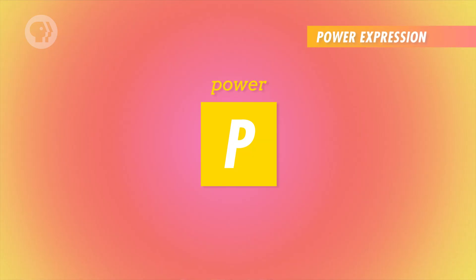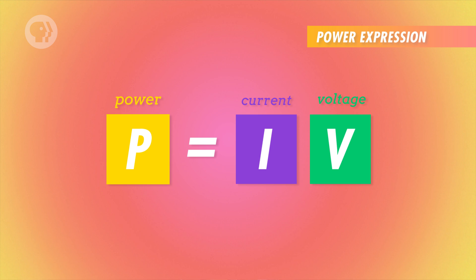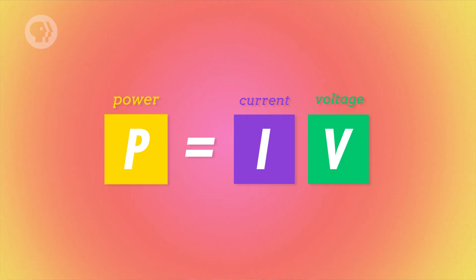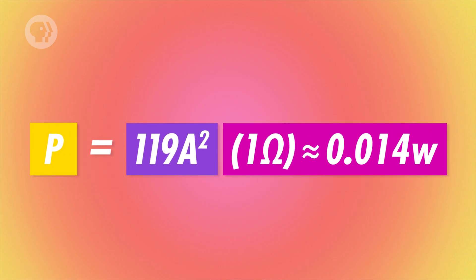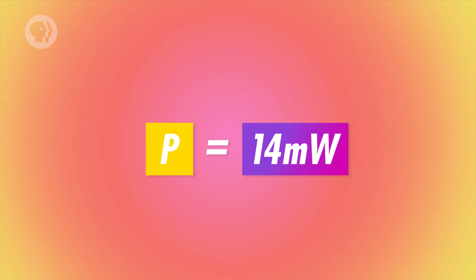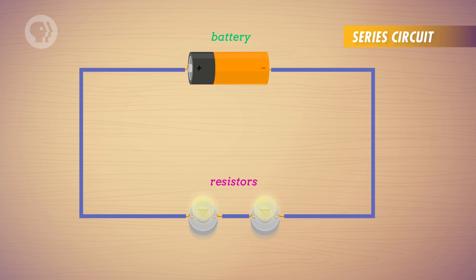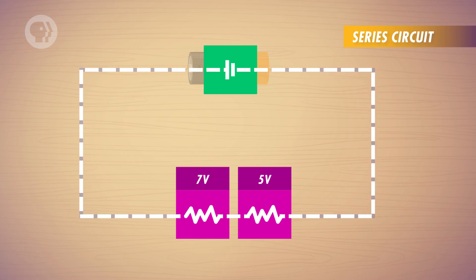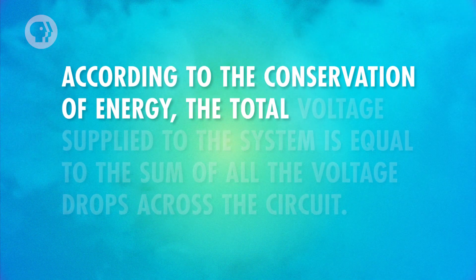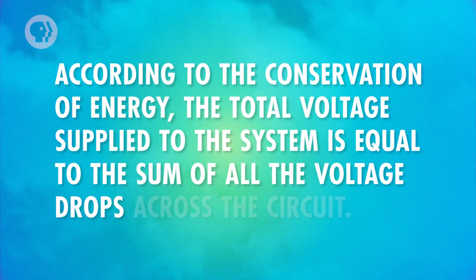To find out exactly how much power is lost to the battery's internal resistance, you can use the power expression from our last lesson: power equals current times voltage. Because that equation shows the rate at which energy is converted from electricity into another form, such as heat, light, or mechanical power. Since we don't know the voltage drop across the internal resistance, you can use Ohm's law and substitute current times resistance for the voltage. From this equation, you can see that the internal resistance causes the battery to use about 14 milliwatts of power. Now, when at least two resistors are connected along the same path, they're connected in series, and any devices connected in series have the same current flowing through them. While all resistors along the same wire have the same current, they each have different voltages dropping across them. According to the conservation of energy, the total voltage supplied to the system equals the sum of all the voltage drops across the circuit.